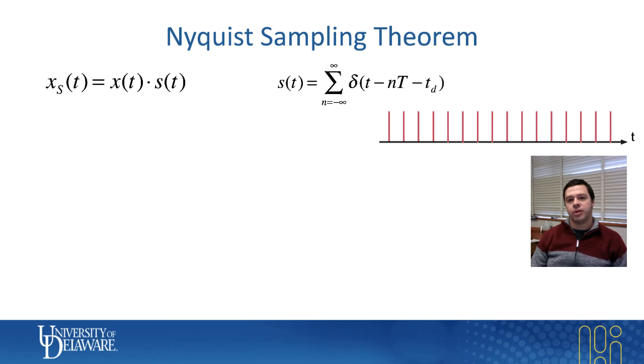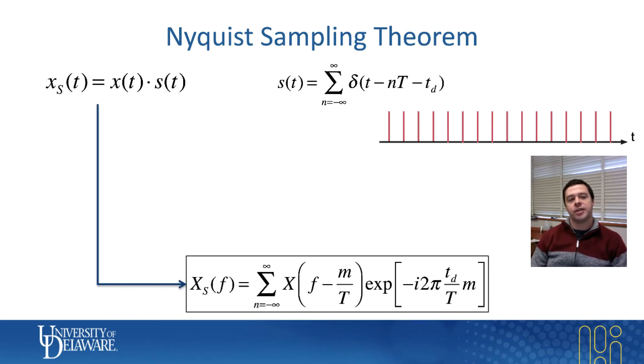So Nyquist sampling theorem basically covers that situation. And what it says is that it actually says something about the Fourier transform of our signal. So the Fourier transform of the signal that's going to show up on our photo diode turns out to be given by some other infinite series.